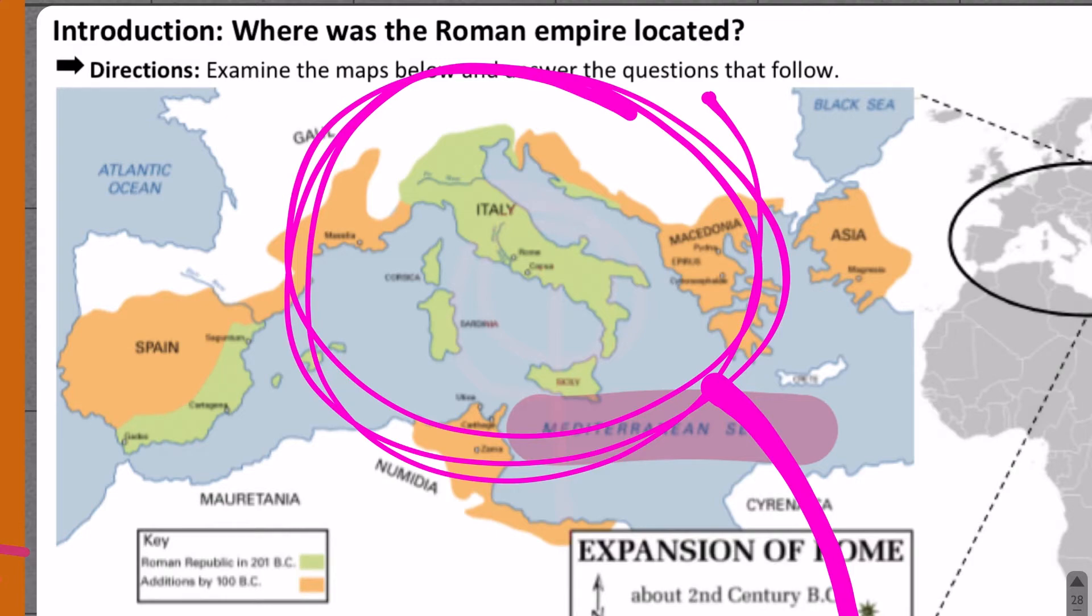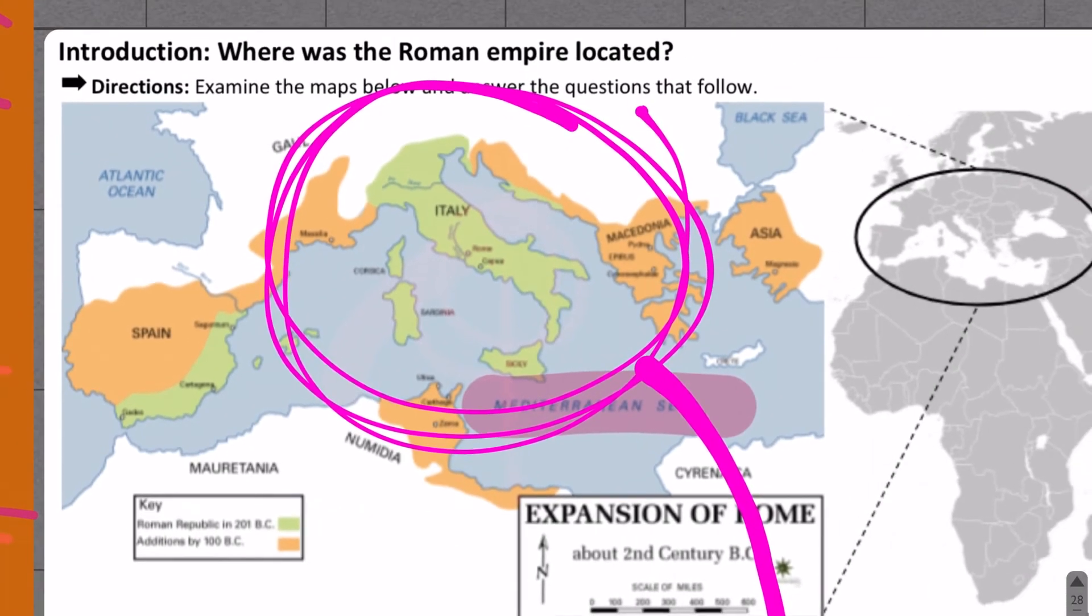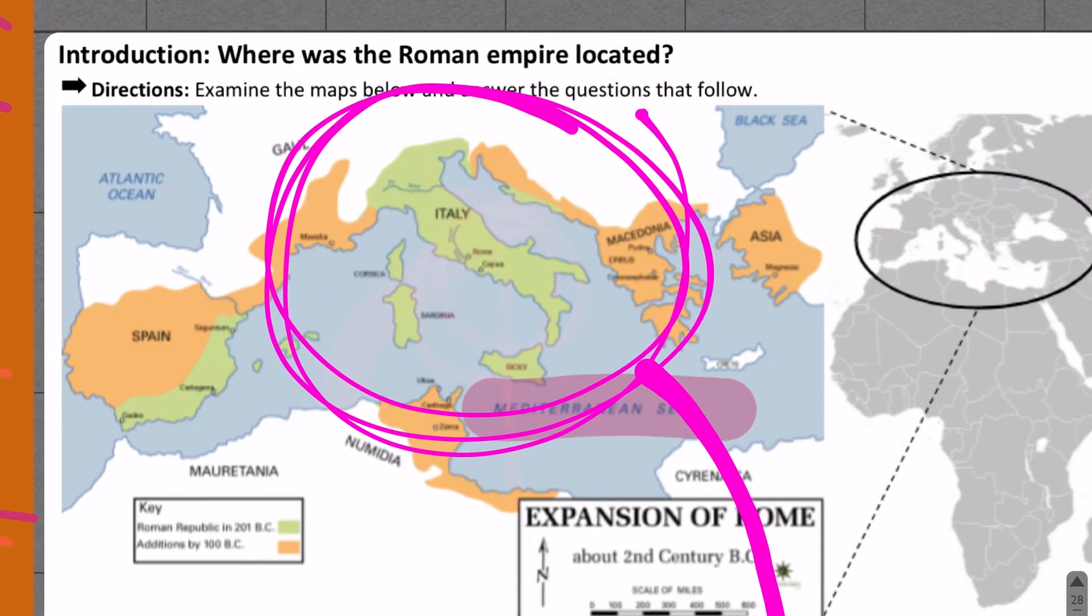If we look at the key in the bottom left corner, the Roman Republic is in green. That's 201 BC, and then additions by 100 BC. You can see it's expanding outward.